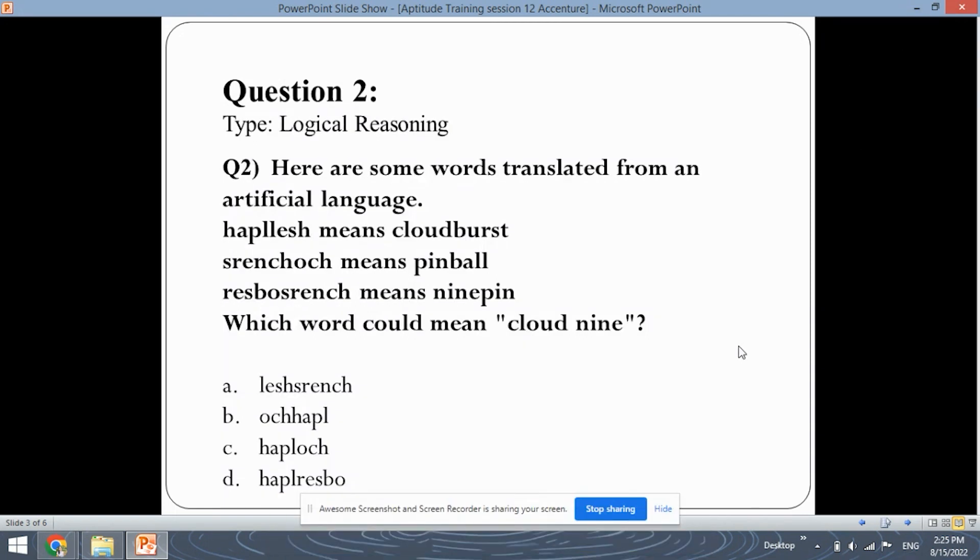This is of logical reasoning type. Here are some words that are translated from an artificial language. In this language, haplish means cloud burst, srenshosh means pinball, and resposrench means nine pin. So, according to this language, which word could mean cloud nine? And these are the given options that you need to find out.